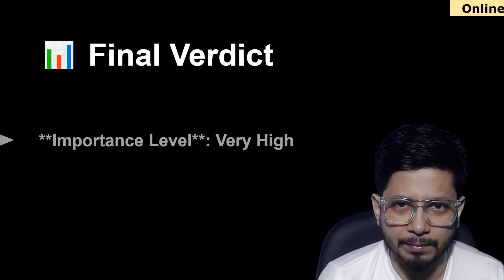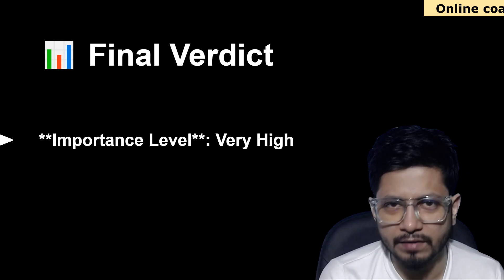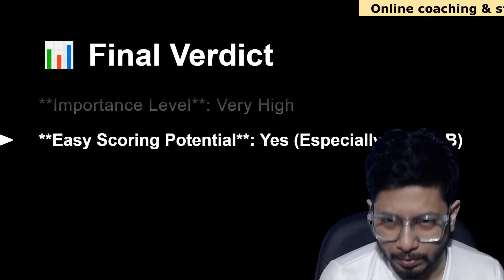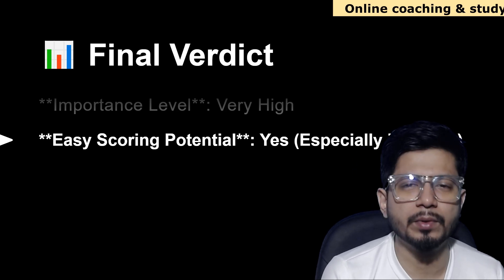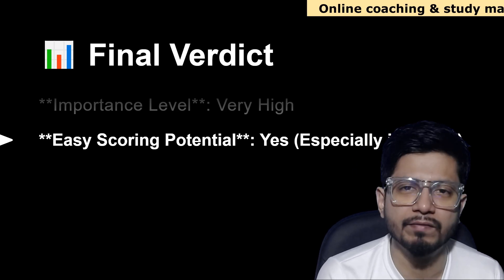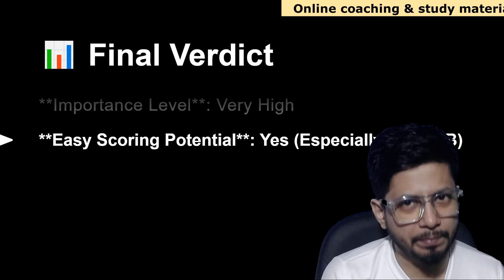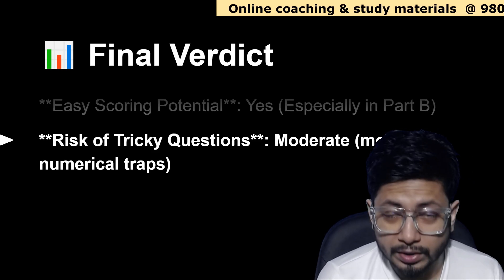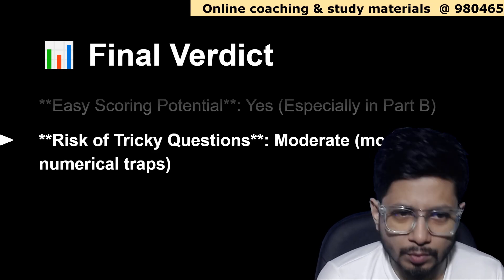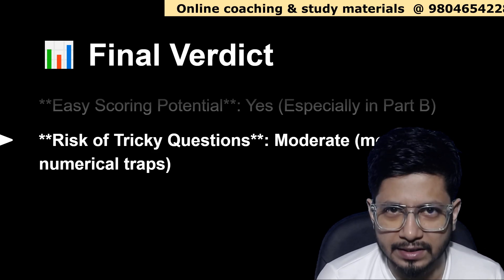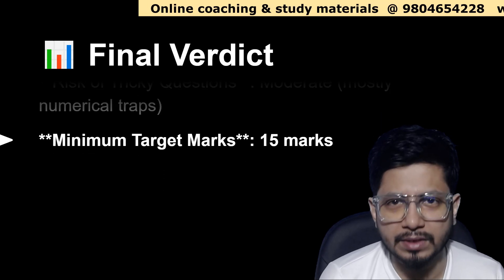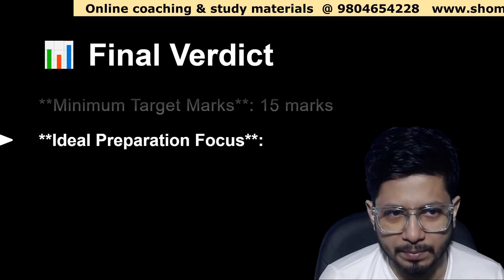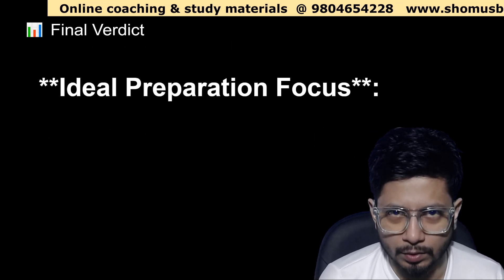The final verdict regarding biochemistry: the importance level of the biochemistry unit is very high. The scoring potential is relatively easy, especially in the Part B section. The risk of tricky questions is moderate — tricky questions are asked mostly from numerical traps. The minimum target marks should be 15 marks for biochemistry preparation.